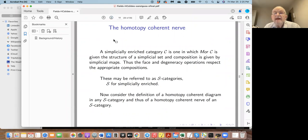This brings us to the homotopy coherent nerve, or rather, it brings us closer to it. First of all, what's the simplicially enriched category? It's one in which the morphisms are given the structure of a simplicial set. Composition is given by simplicial maps. Face and degeneration operators respect those compositions. Using this fancy S for simplicially enriched, we will call these S-categories to not have to keep saying simplicially enriched. So now we can try and make sense of a homotopy coherent diagram in any S-category, and therefore from the diagram we can get a nerve.